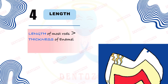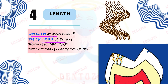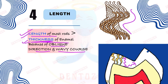Next, the length of enamel rods is more than the thickness of the enamel in which they are present. This is possible because these rods run a wavy course, and also run in an oblique direction — meaning the wavy course is not in a straight direction but oblique. Because of this, the length of most rods is greater than the thickness of enamel. Also, the length of enamel rods in the cuspal region is more than those in the cervical region.